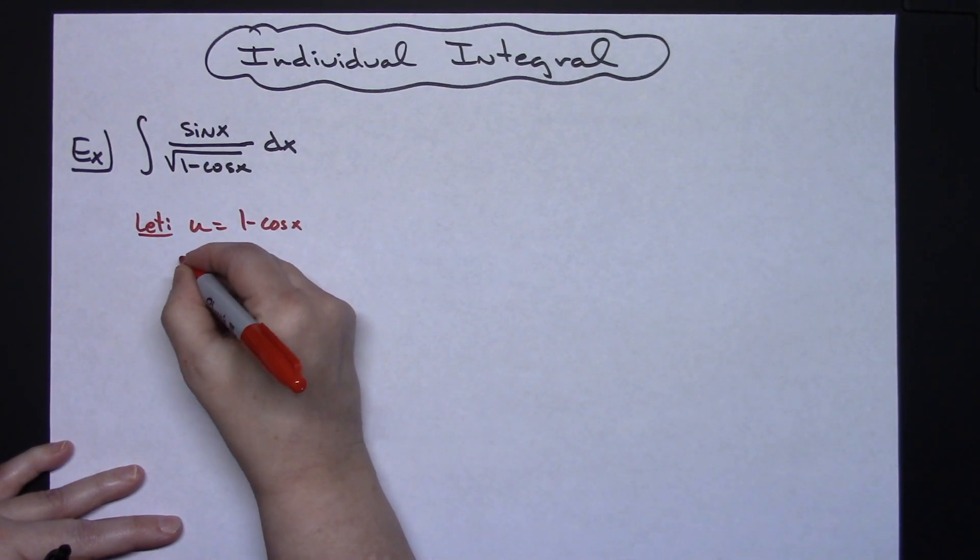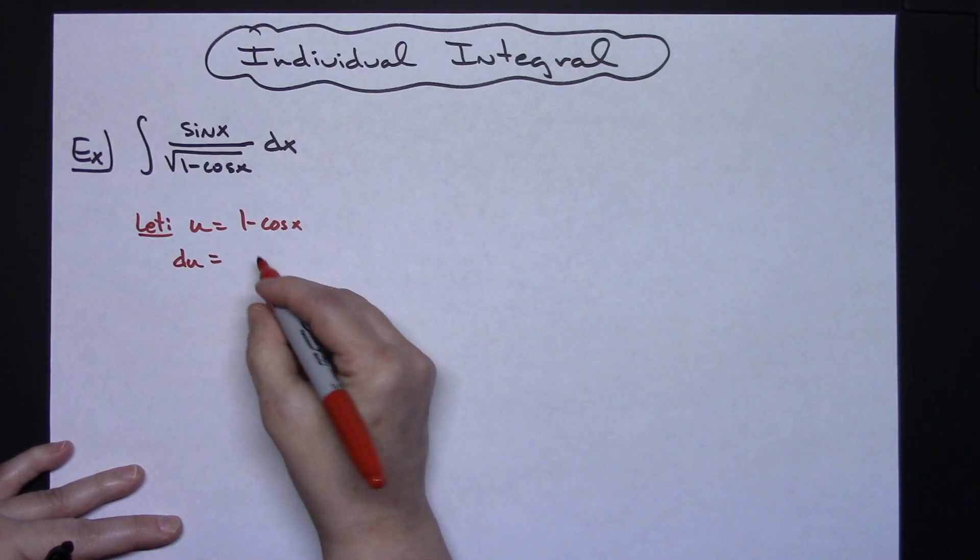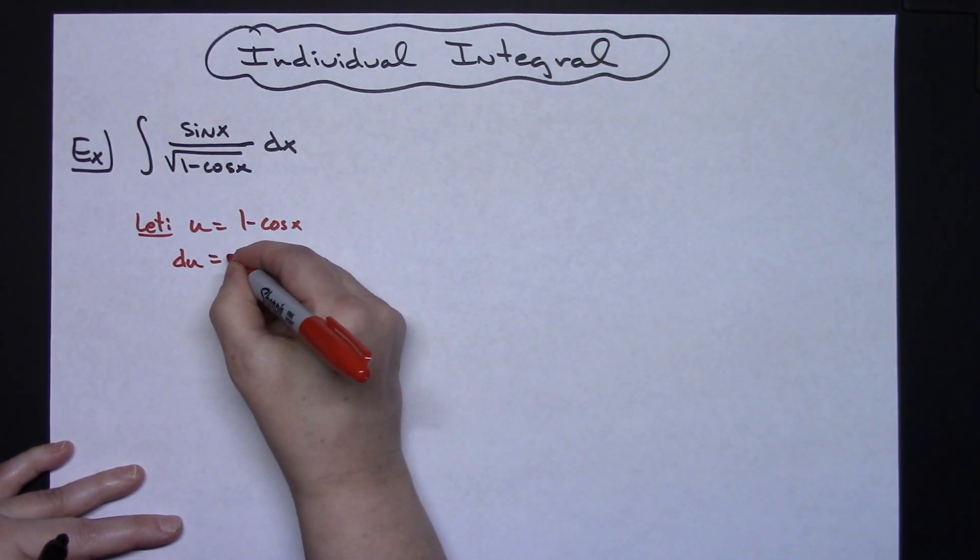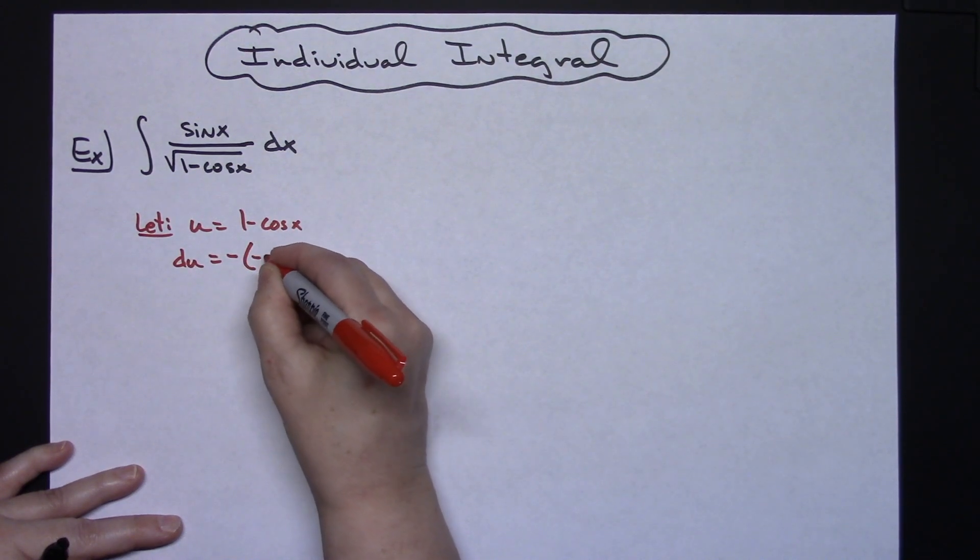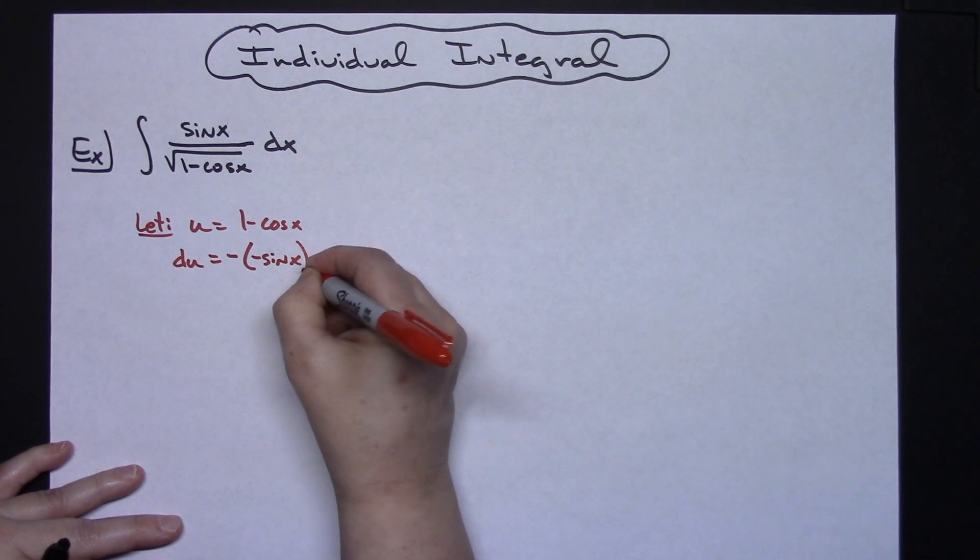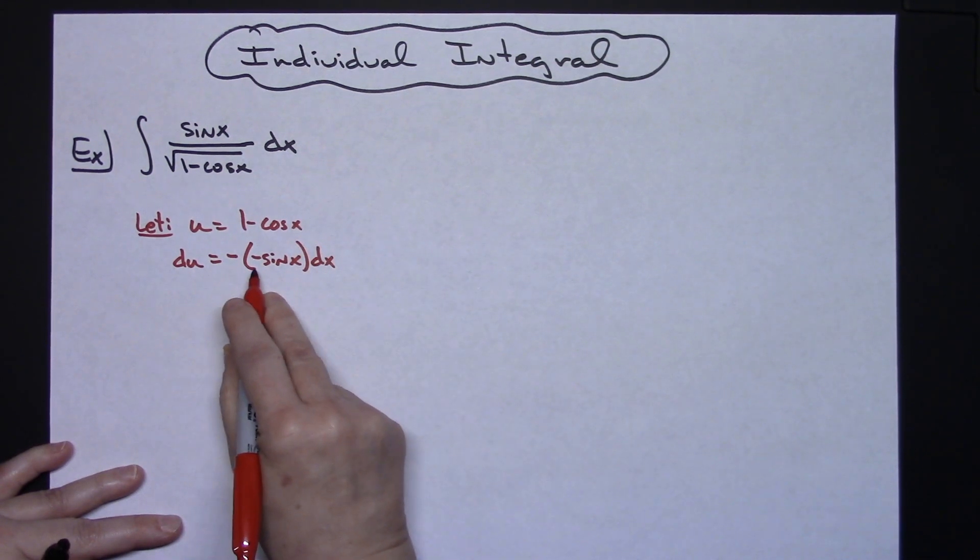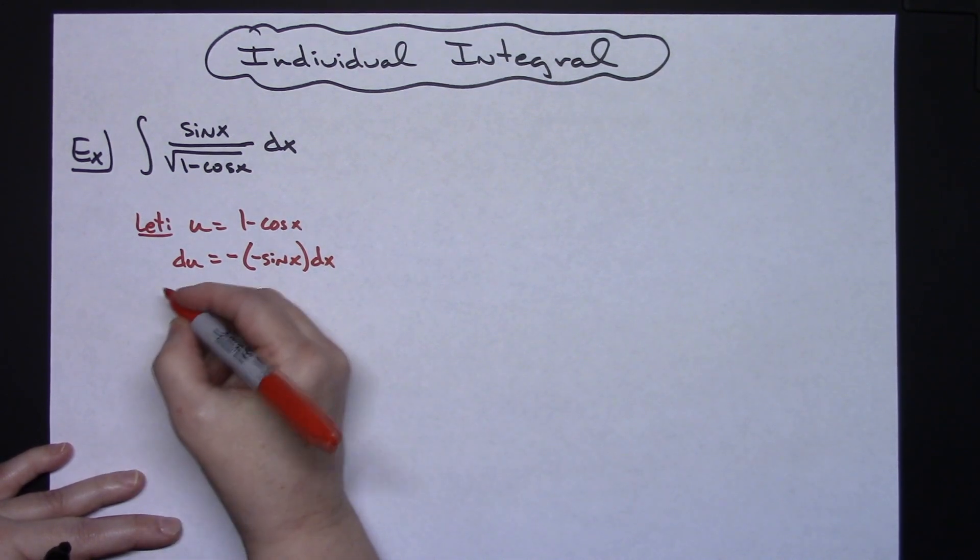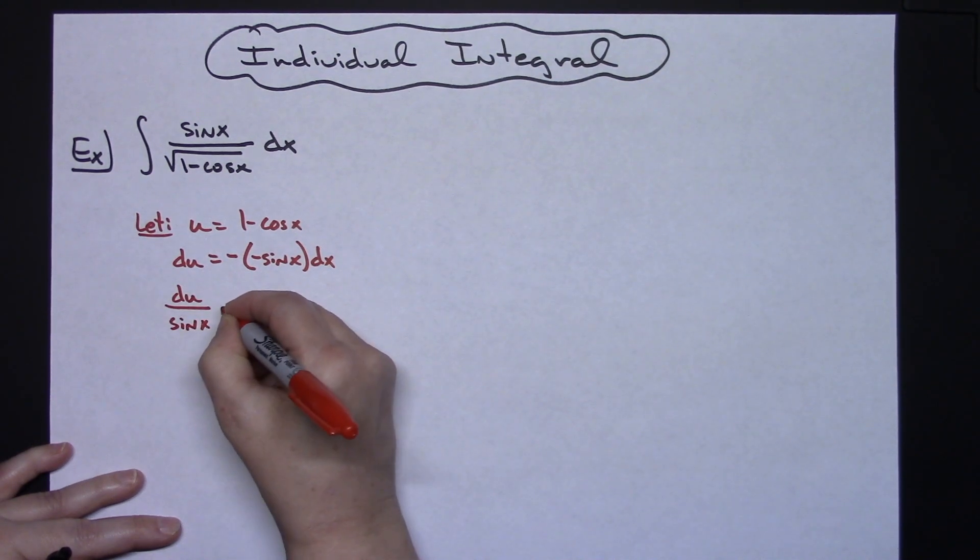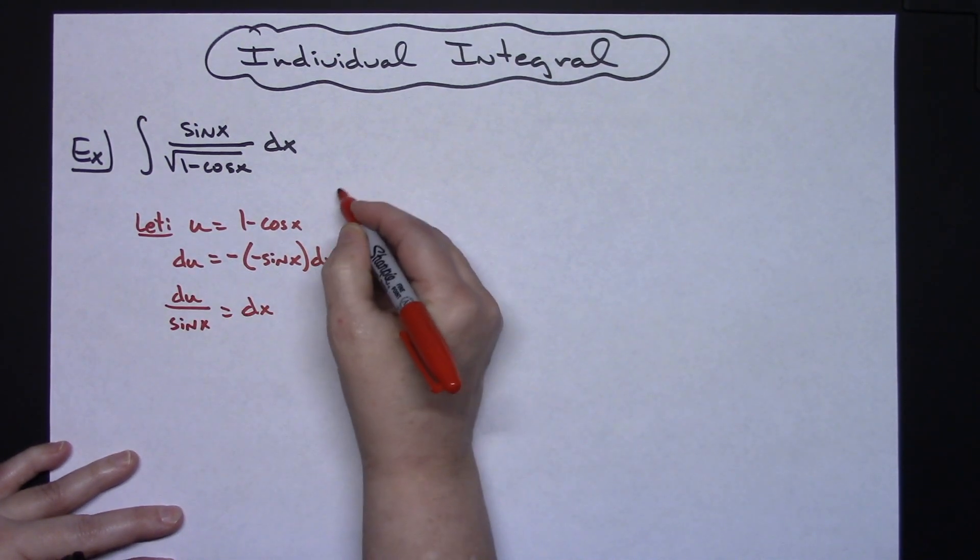Then I need to take the derivative. The one's going to fall out. I'm going to have the minus sign that's already there and then the derivative of cosine is a negative sine x dx. A negative times a negative is going to make that a positive. And I am going to want to solve for dx so I'll just divide both sides by that positive sine x. So I'll have du over sine x is equal to dx.